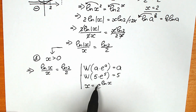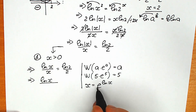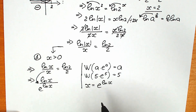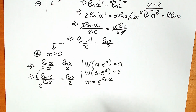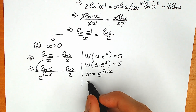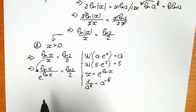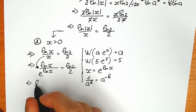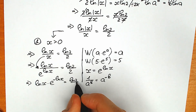So instead of this x, let's write e to the power natural log x. We have natural log x divided by e to the power natural log x, equal to natural log 2 over 2. Now we need to remember an important property: whenever we have 1 over a to the power b, when we bring this to our numerator we need to put a minus sign, so a to the power minus b. Let's write this expression in our numerator with the negative sign. So we have natural log x times e to the power minus natural log x, equal to natural log 2 over 2.